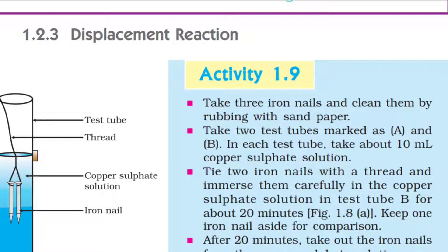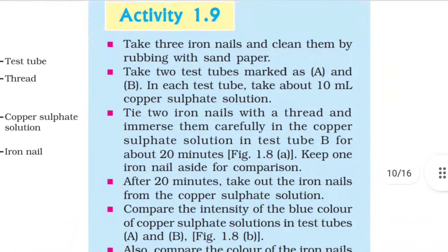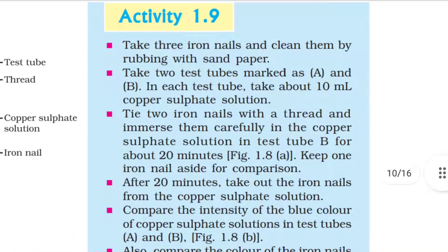Displacement Reaction — Activity 1.9: Take 3 iron nails and clean them by rubbing with sandpaper. Take 2 test tubes marked as A and B. In each test tube, take about 10 ml copper sulfate solution. Tie 2 iron nails with a thread and immerse them carefully in the copper sulfate solution in test tube B for about 20 minutes. Keep 1 iron nail aside for comparison.